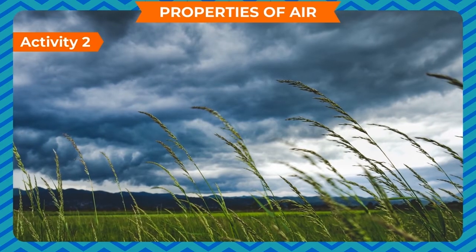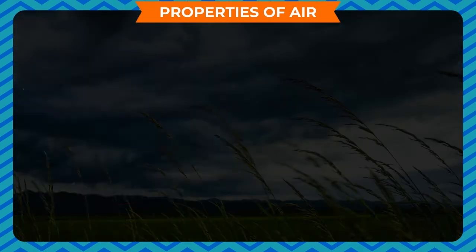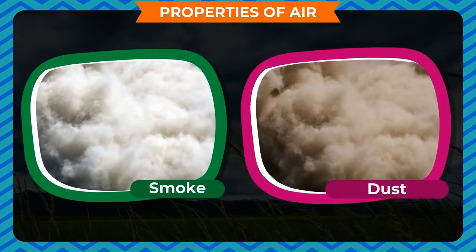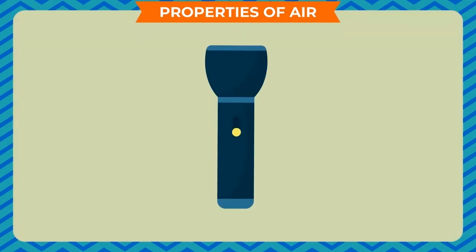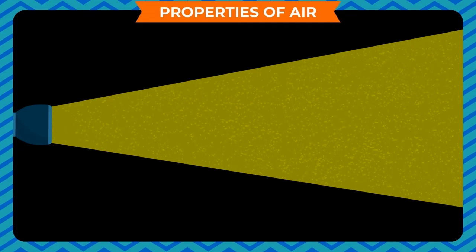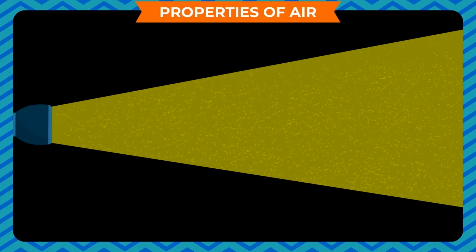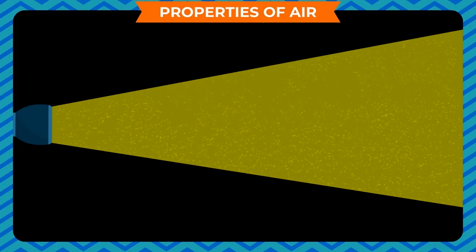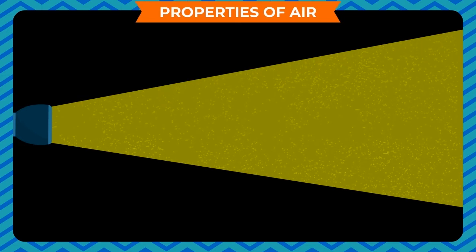Activity to illustrate that air always contains dust or smoke particles: Materials required — an electric torch. Method: Choose a room in your house such that no light from outside enters. Close all the doors and windows completely. Stand in the corner of the dark room and switch on the electric torch. You will see tiny, very small dust particles shining in the beam of light. These particles move continuously, proving that air always contains dust or smoke particles.